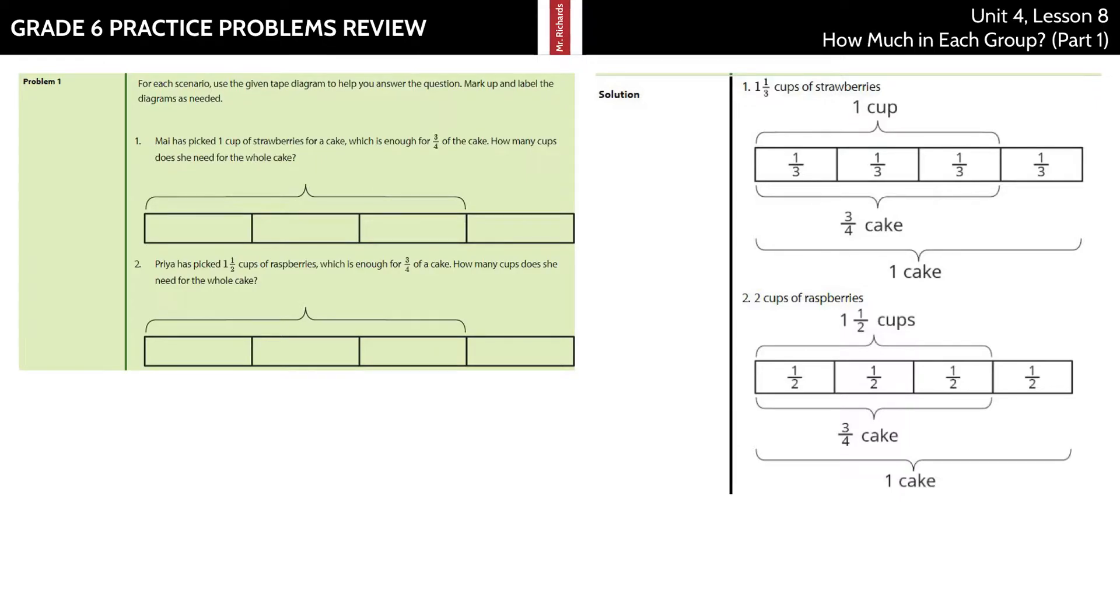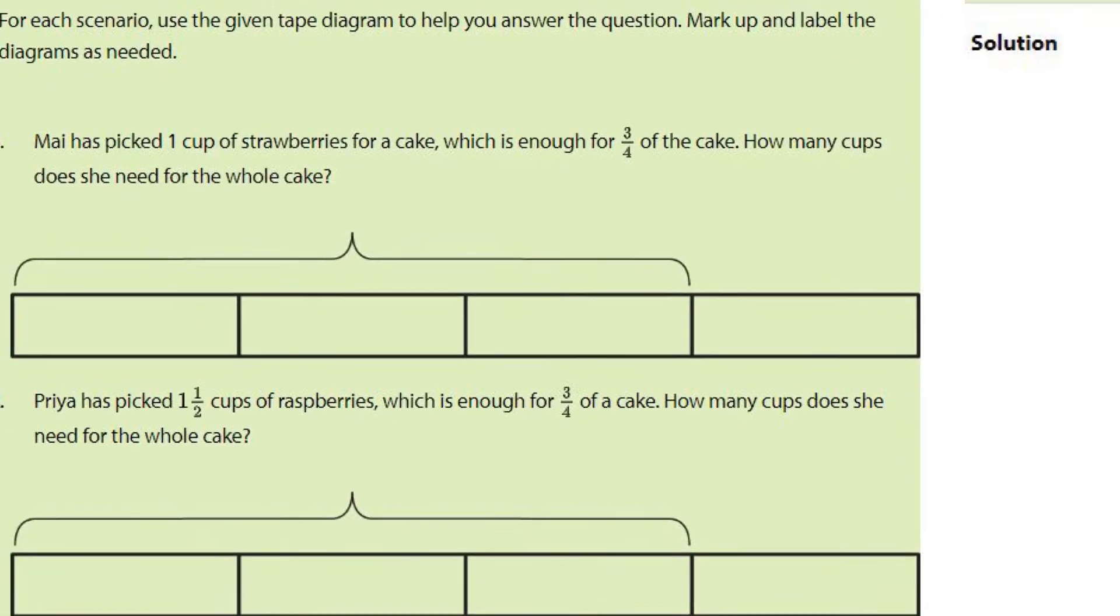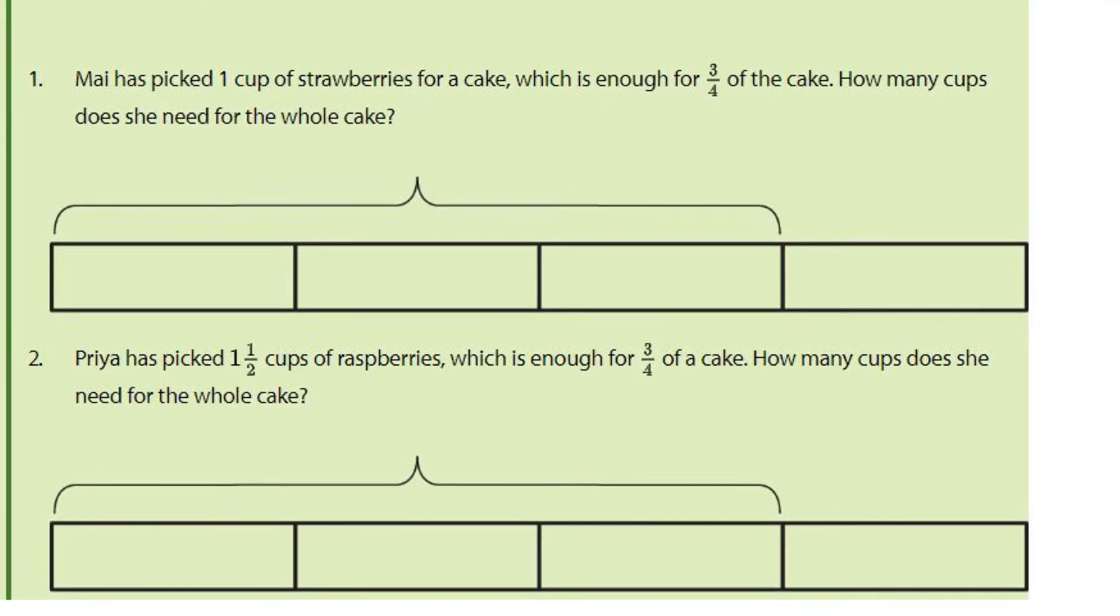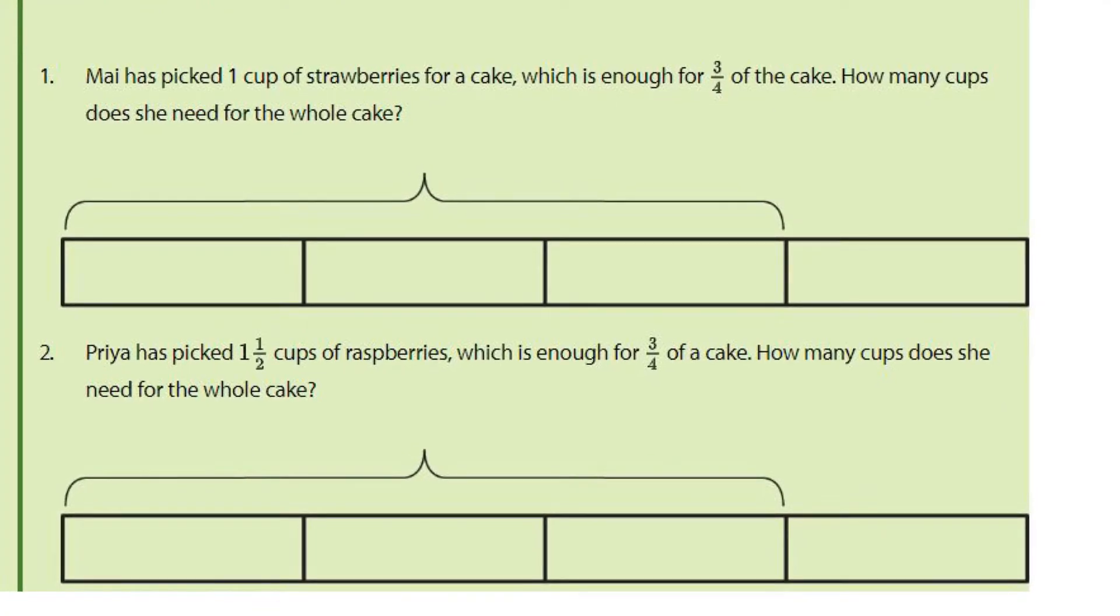Our first problem: for each scenario, use the given tape diagram to help you answer the question. Mark up and label the diagrams as needed. In Question 1, May has picked one cup of strawberries for a cake, which is enough for three-fourths of the cake. How many cups does she need for the whole cake?